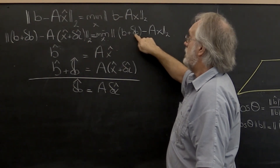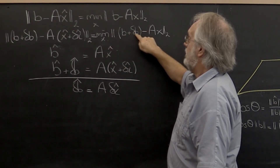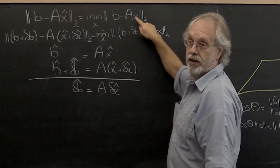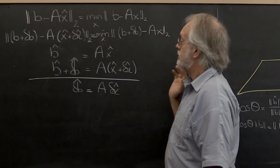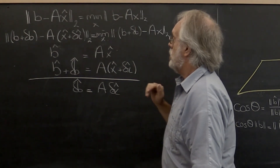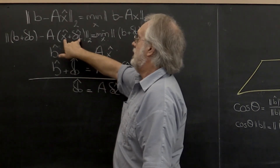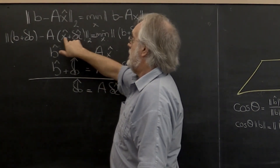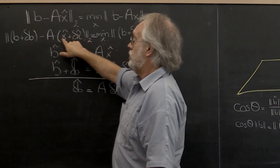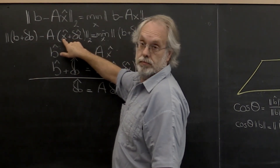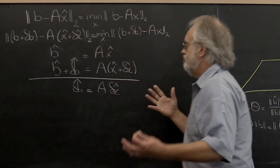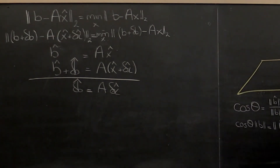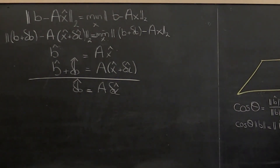Let's call that delta b. Remember, we're using delta and b together to indicate that this is a whole vector of small changes. What we then get is a change in the solution. What does that really mean?